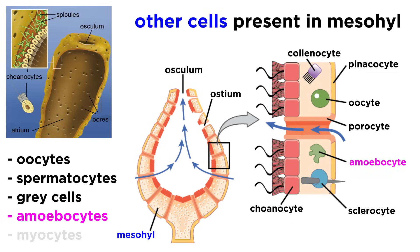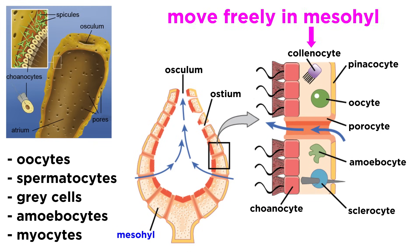There are also amoebocytes, which are amoeba-like totipotent cells that can transform into any other type of cell, as well as myocytes, which conduct signals and allow parts of the animal to contract, and several types of collagen-producing cells. Many of these cells, excluding the sclerocytes, can actually move and drift freely in the sponge mesohyl. If you look closely at some of these cells, they look and behave almost like individual protozoa, which supports what we learned about the emergence of multicellular life in an earlier tutorial.